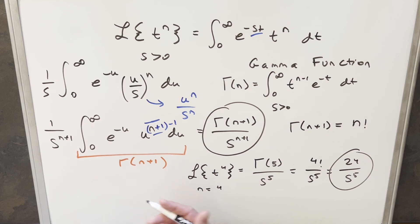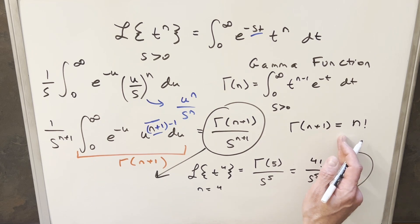So like I mentioned at the beginning of the video, some people like to have a separate formula just for the integer exponent. So we could do that just using this formula over here and making the replacement here. And so we could say for integers, our formula is going to be n factorial over s to the n plus 1.